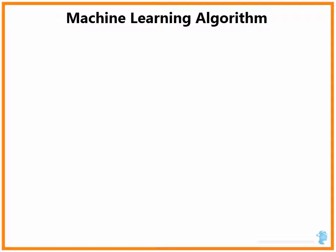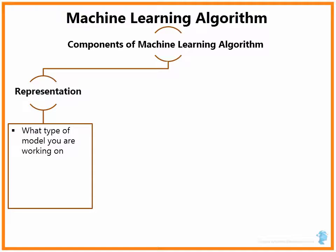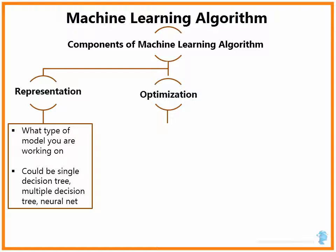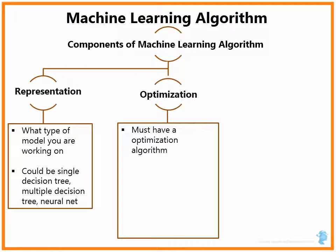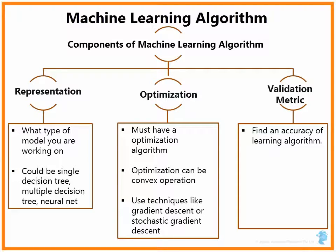Other than the learning techniques, every machine learning algorithm has three components. First is representation or model — that is, what type of model you are working on. It could be a single decision tree, multiple decision trees, a support vector machine, or a neural net. Second is optimization, which is the heart of machine learning. This optimization could be convex optimization using techniques like gradient descent or stochastic gradient descent. Third, it is very important to know about the validation metric, which is useful to find the accuracy of a learning algorithm.